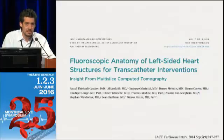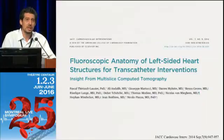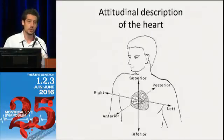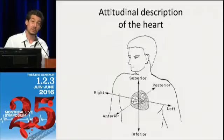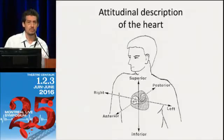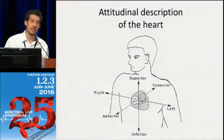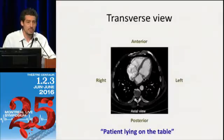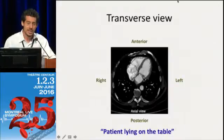Something that was a little bit revolutionary for myself and our team back at home was really to translate the knowledge from CT scan to your C-arm or fluoroscopy suite. In order to do this, it's very important to understand the heart and its attitudinal description — meaning what's anterior, posterior, right, left, superior, and inferior. It's very difficult to understand the echocardiographer when they start talking about anteroseptal and inferolateral and medial septal. But if you stick to this nomenclature you can communicate throughout the different imaging modalities. So how do you go from CT to fluoroscopy? First, you understand the transverse or short-axis view of the heart.